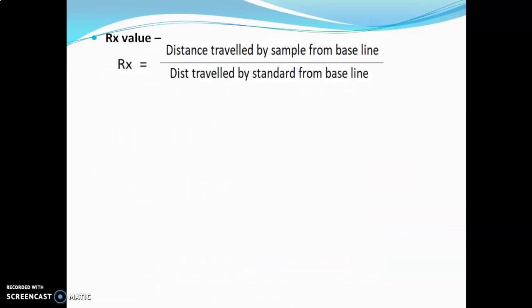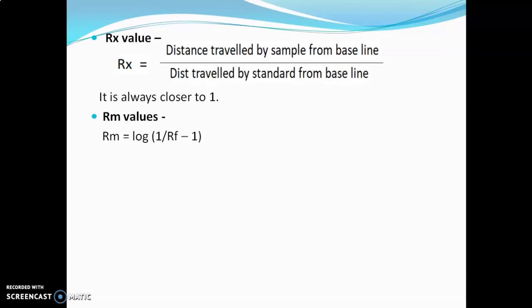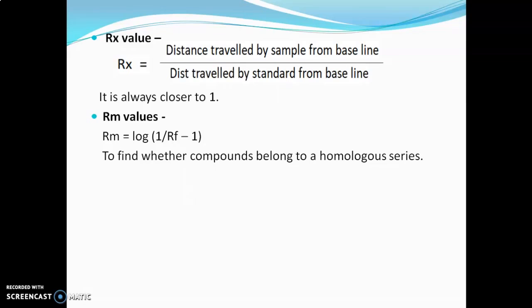The Rx value is calculated using: distance traveled by sample from baseline divided by distance traveled by standard from baseline. This value is also helpful in identification of sample and is always closer to 1. The RM value can be derived by the formula: RM = log(1/RF − 1). RM value is used to find out whether a compound belongs to a homologous series.